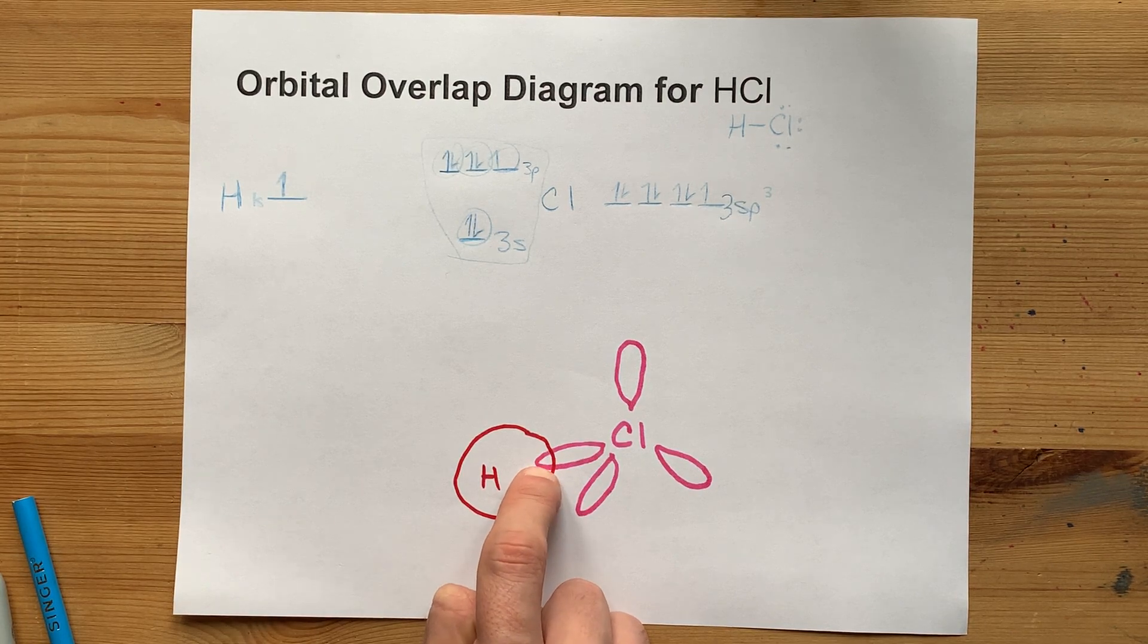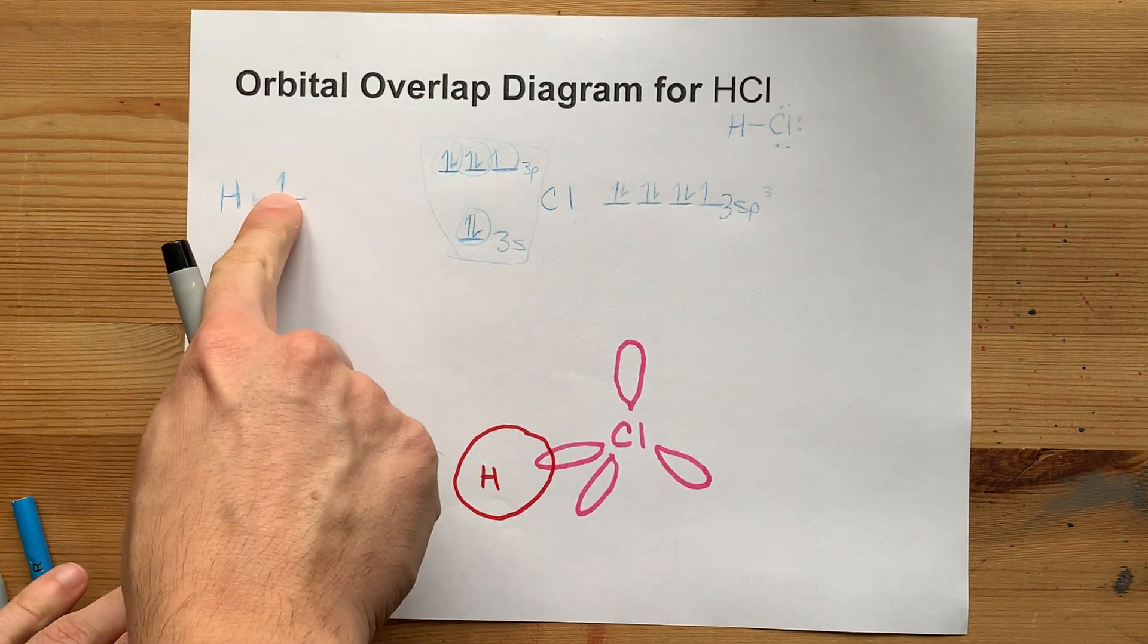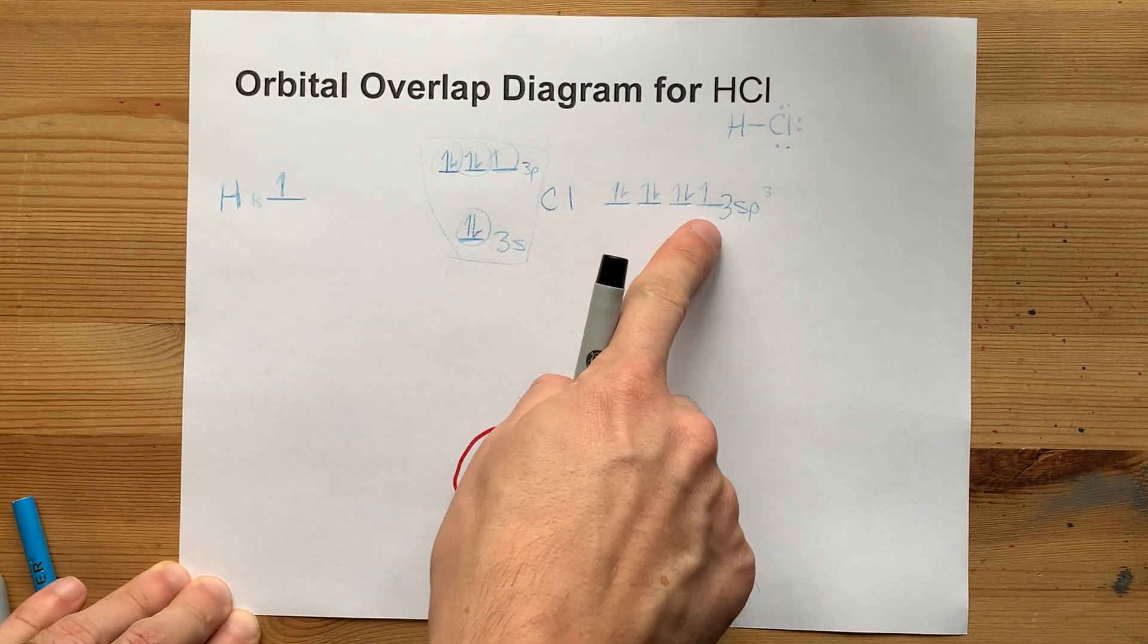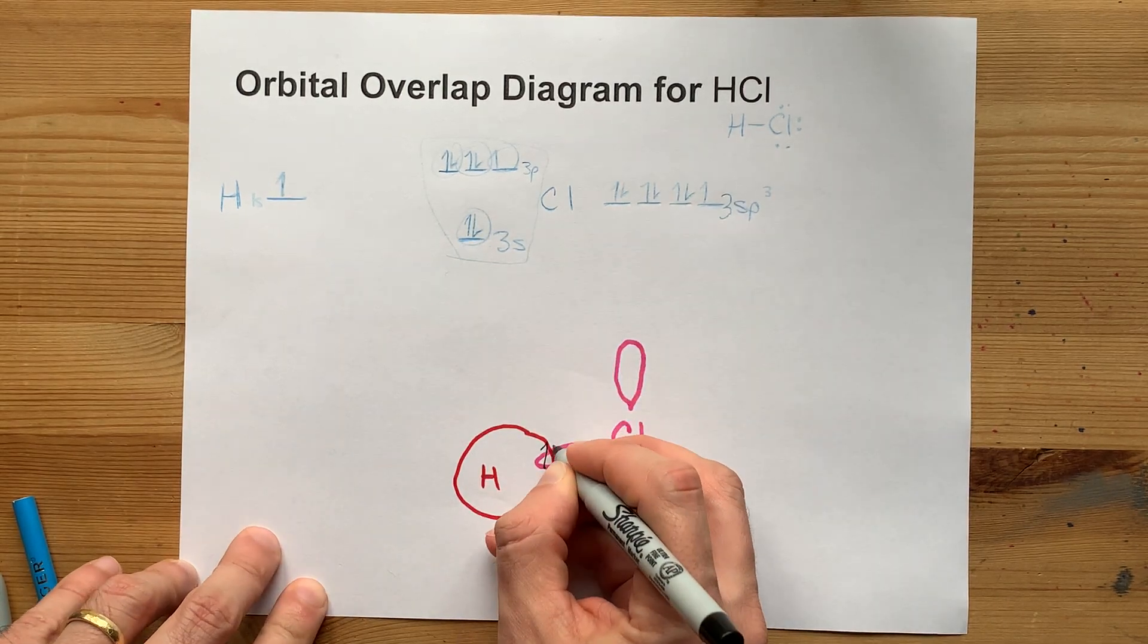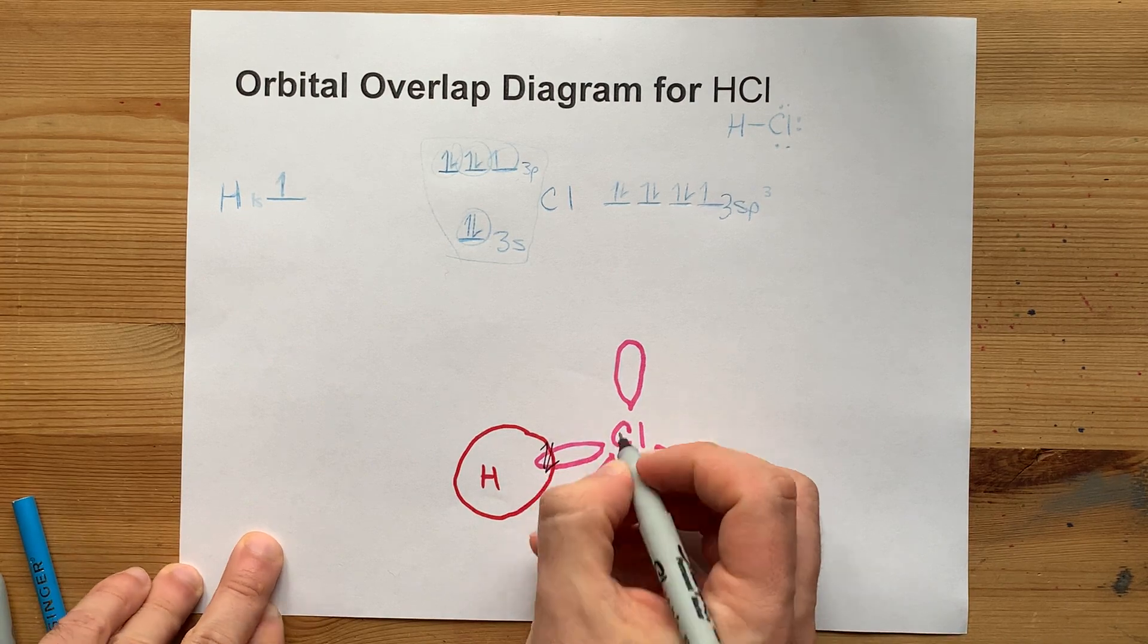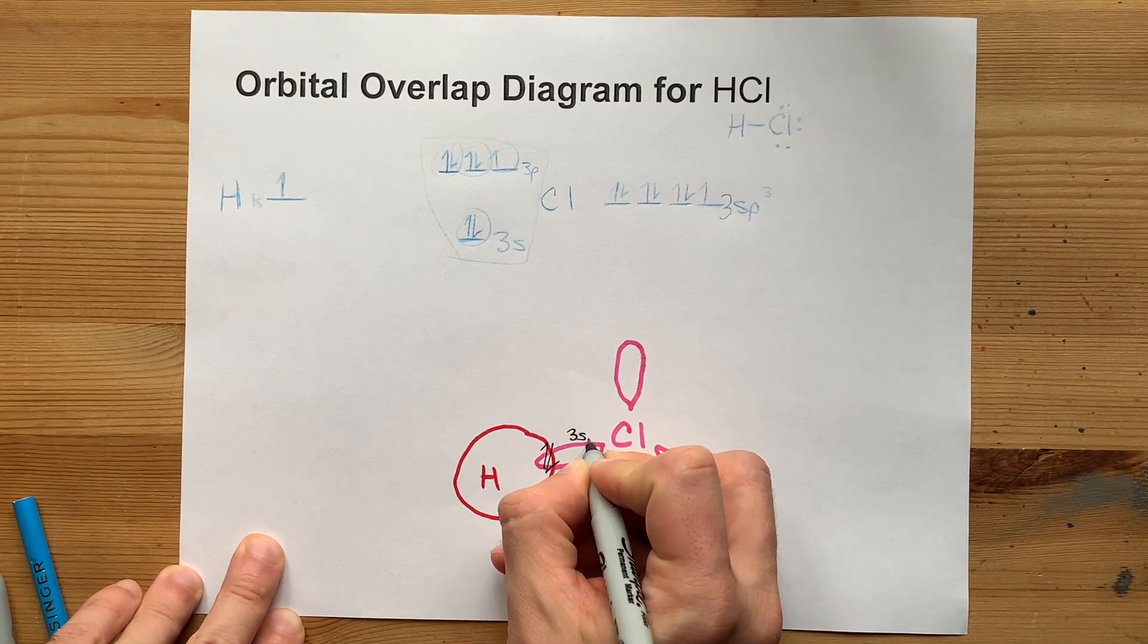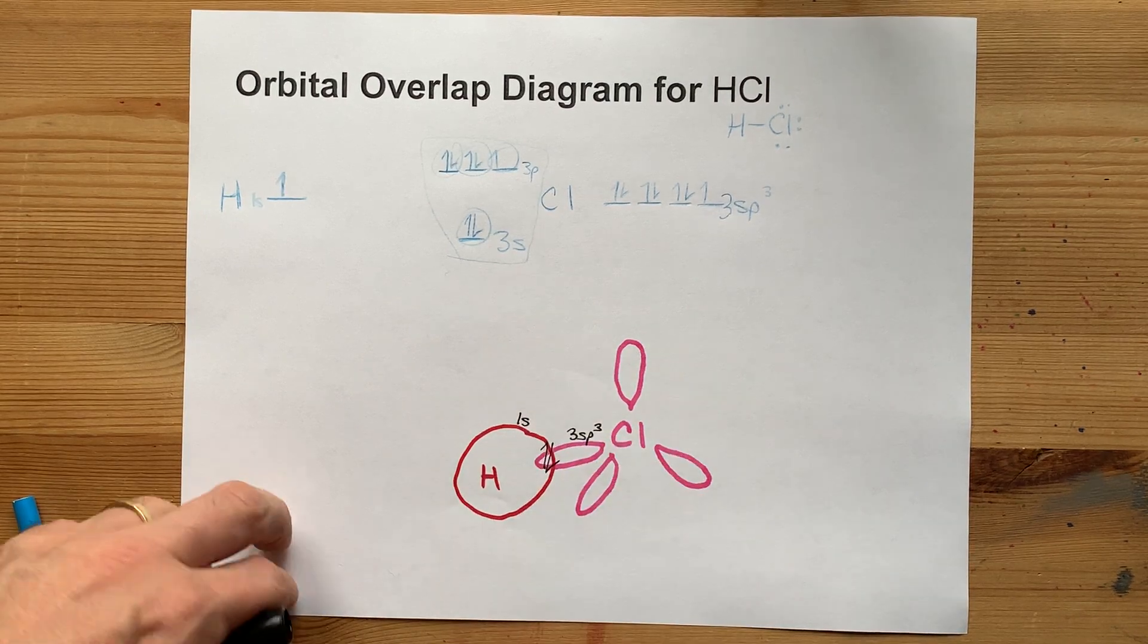In fact, if I was going to put electrons into this, which you probably should, the one electron from hydrogen bonds with the one single electron from chlorine and gives you an electron pair. And there's a covalent bond between chlorine's 3sp3 orbital and hydrogen's 1s orbital.